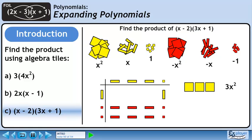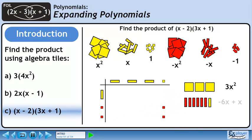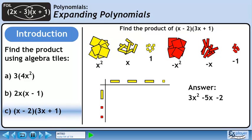We have three large yellow squares, so write down 3x squared. We have six red rectangles and one yellow rectangle, so this represents minus 6x plus x. A yellow rectangle and a red rectangle cancel each other out, leaving minus 5x. There are two small red squares, so write down minus 2. We now have our product: 3x squared minus 5x minus 2.